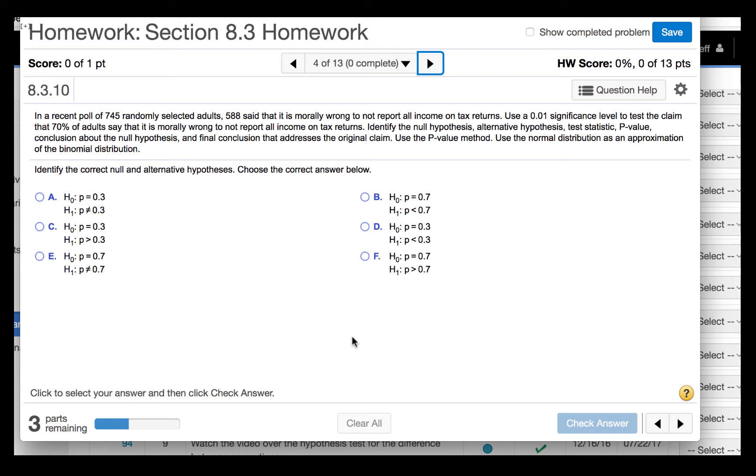We begin by identifying the correct null and alternative hypotheses. The problem says to test the claim that 70% of adults say that it is morally wrong. So that is equal to or not equal to. It doesn't say to test that it is greater than or less than 70%, but rather that the percentage is 70%.